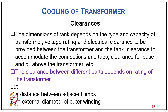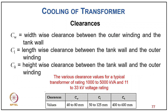The dimensions of the tank depend on type and capacity of transformer, voltage rating, electrical clearance between transformer and tank, and clearance for connections, taps, oil, and base. Width-wise clearance CW between outer winding and tank wall, length-wise clearance CLE, and height-wise clearance CH. For transformers of 1000–500,000 kVA at 11–33 kV: CW = 40–80 mm, CLE = 50–125 mm, and CH = 400–600 mm (including 50–60 mm base, 150–250 mm above oil, and 200–250 mm for leads).